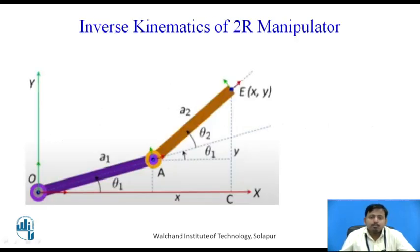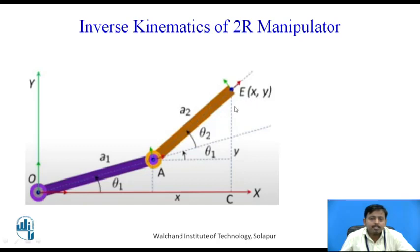This is the 2R manipulator. The link lengths a1 and a2 are prescribed. The end effector position x, y — that is E(x, y) — is also given, where this distance is y and this distance is x. What we are required to find out are the joint angles theta 1 and theta 2 in the inverse kinematics problem of the 2R manipulator.